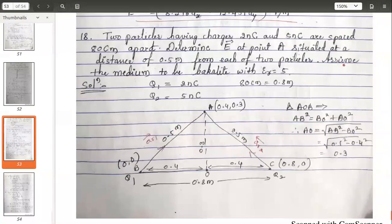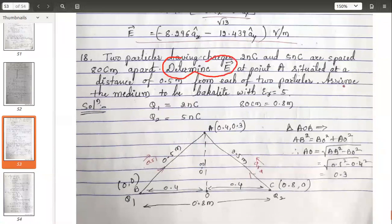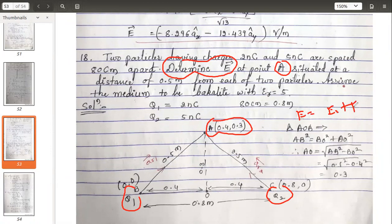Now what is the given question? We need to determine the field intensity at point A. It is very obvious there are two charges q1 and q2, so the total field E, the net field, will be the summation of the individual fields E1 and E2.